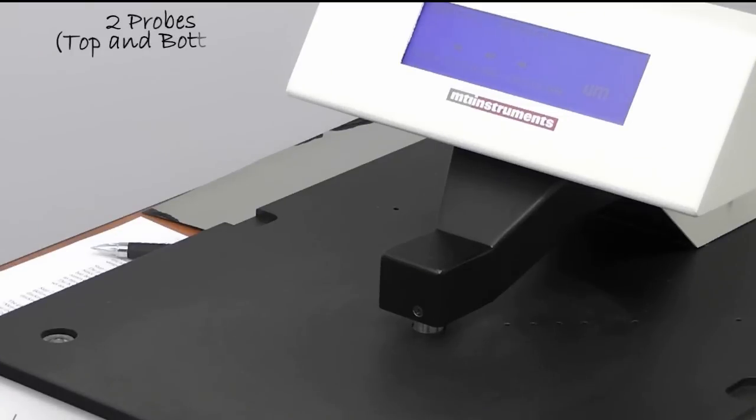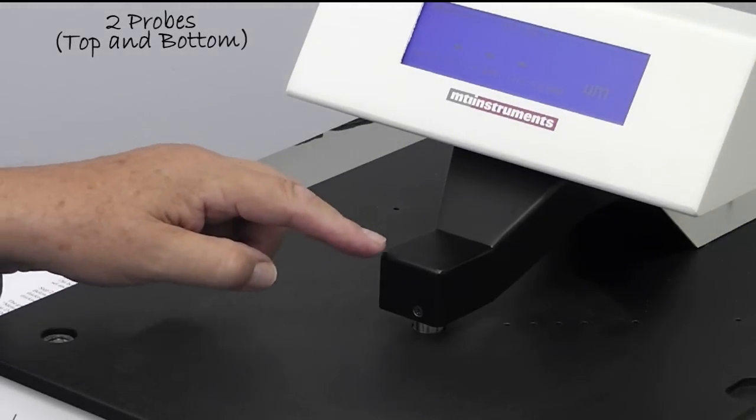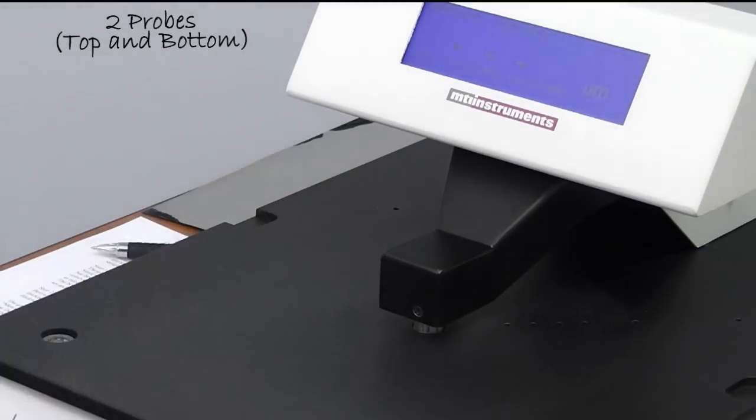The Proforma 300 uses two non-contact capacitive sensors. One is mounted in the top of the arm here and the other probe is inside the table. In between both probes, you get an accurate thickness measurement.